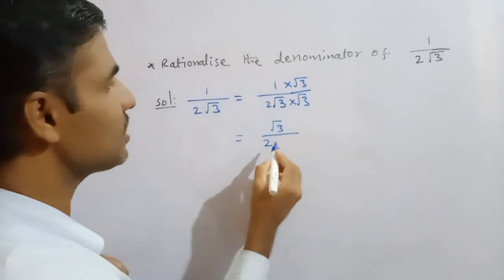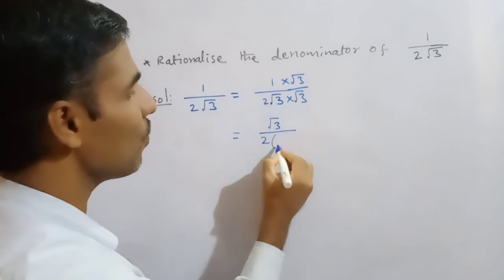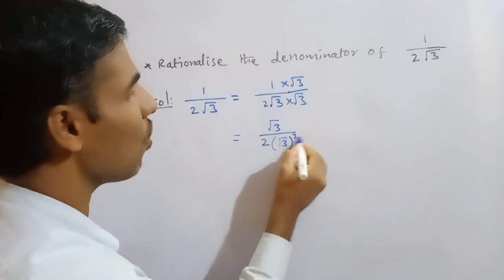Okay, now next, here which one is there here? Root 3 into root 3. We can write here root 3 whole square.